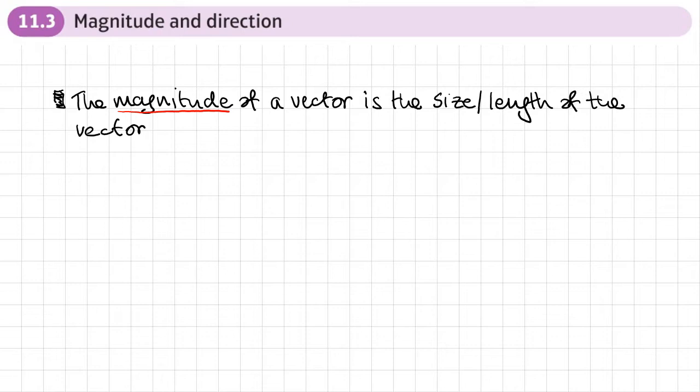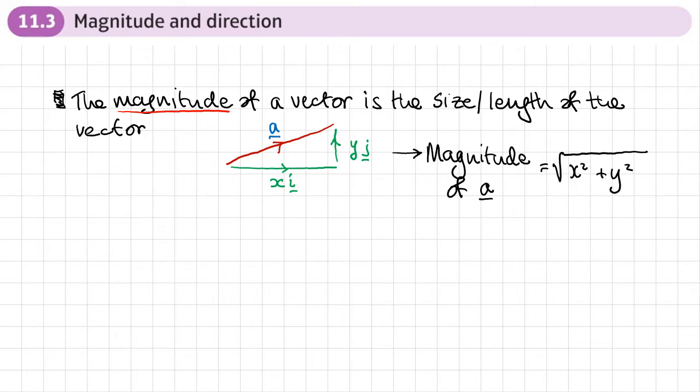Well, the magnitude of a vector is the size or the length of the vector. So let's say, for example, I've got a vector a here and the value of a, it goes x squares across or x number of i's across and y value of j's going up. Well, then the magnitude or the size of the length of a is given by Pythagoras. So the square root of x squared plus y squared. You see it here.